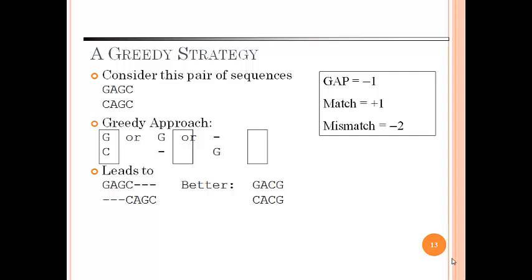We will discuss various strategies and the first one is the greedy strategy. We are considering the pair of sequences GAGC and CAGC according to greedy approach. Following is the alignment. Here gap is minus 1, match is plus 1 and mismatch is minus 2. That leads to GACG and CAGC.